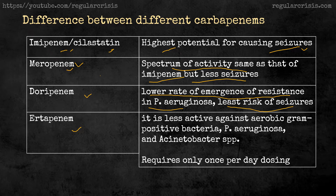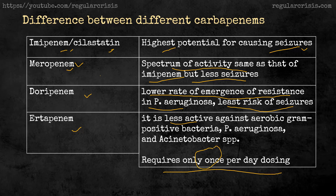Coming to ertapenem: its spectrum of activity differs from the others. It is less active against gram-positive bacteria, less active against Pseudomonas aeruginosa, and less active against Acinetobacter. So its spectrum is weaker compared to the other three carbapenems. However, the key benefit of ertapenem is that it requires only once-daily dosing. Imipenem, meropenem, and doripenem need to be given every six to eight hours, while ertapenem is given just once a day — making it a good option for ward or home-care IV antibiotic therapy.